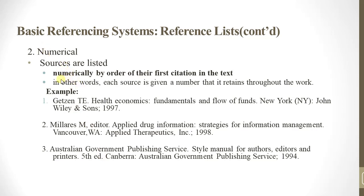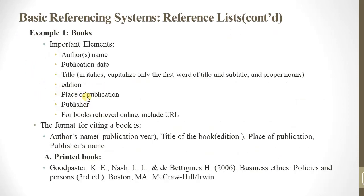The numerical system organizes references numerically by the order of the first citation in the text. For a book, the important elements are: author's name, publication date, title in italics with only the first word of titles and subtitles and proper names capitalized.